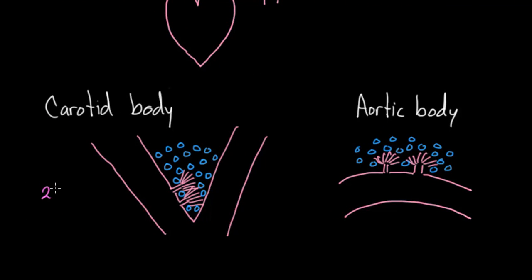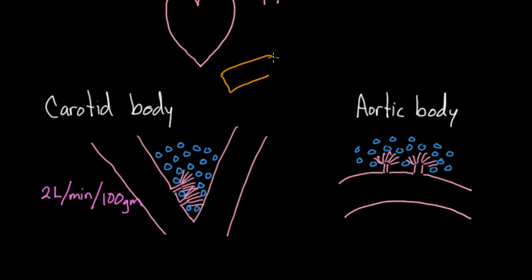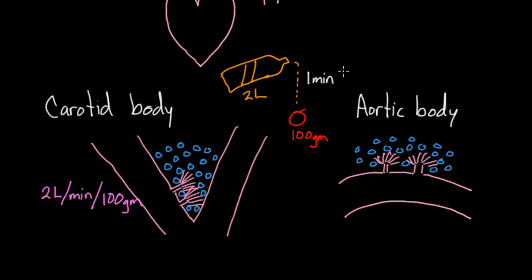One interesting fact about the carotid body is that it gets a lot of blood flow — in fact, some of the highest blood flow in the entire human body: about two liters per minute per 100 grams. To put that in perspective, imagine a two-liter bottle of soda poured over something about 100 grams — maybe a tomato. If you could pour that bottle out in one minute, imagine how much perfusion that tomato gets. That is how much perfusion your carotid body gets.